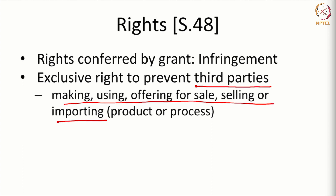The patent right can manifest either in a product — what we call a product patent — or in a process, a method, or a way of preparing or manufacturing something. A product patent will have the same term as a process patent, but a product patent is a more comprehensive right than a process patent.